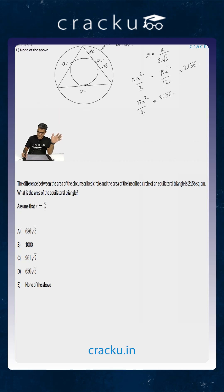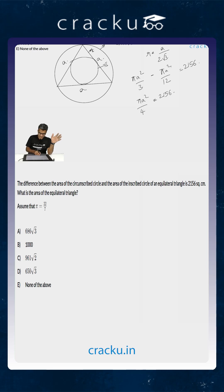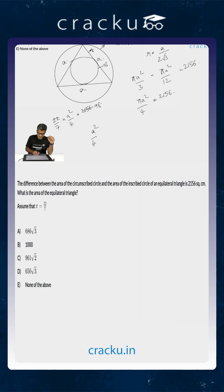Using π = 22/7, we get (22/7) × (a²/4) = 2156. Dividing 2156 by 22 gives 98, so a²/4 = 98 × 7 = 686.